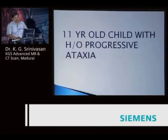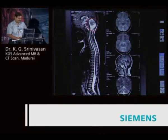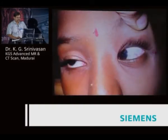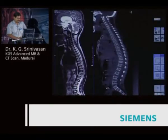Eleven-year-old child with progressive ataxia. You can see significant cerebellar shrinkage with prominent cerebellar hemispheric and vermian sulci, mild atrophy of the spinal cord with roomy CSF subarachnoid spaces — the classical appearance of ataxia telangiectasia.